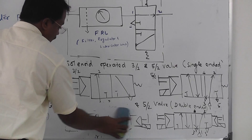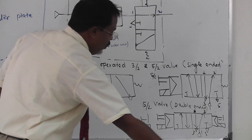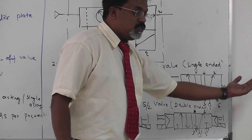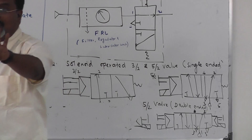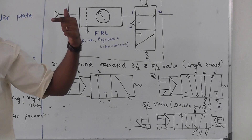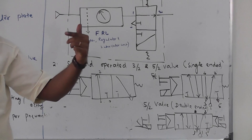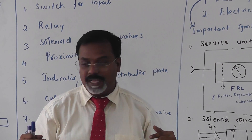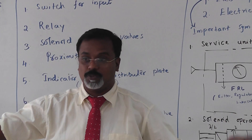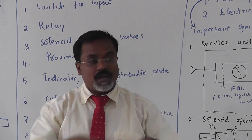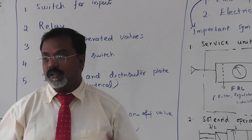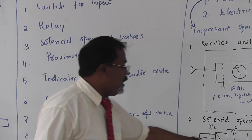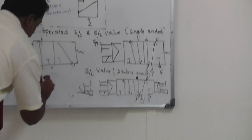The double-ended 5/2 valve: when you energize one solenoid, the valve moves for the forward stroke; when you energize the other solenoid, it comes back for the reverse stroke. This is similar to a pilot operated valve in pneumatics — where compressed air drives the spool in either direction — but here instead of pilot air, you give an electrical signal to the solenoid. Energizing one end gives the forward stroke; energizing the other gives the reverse stroke.